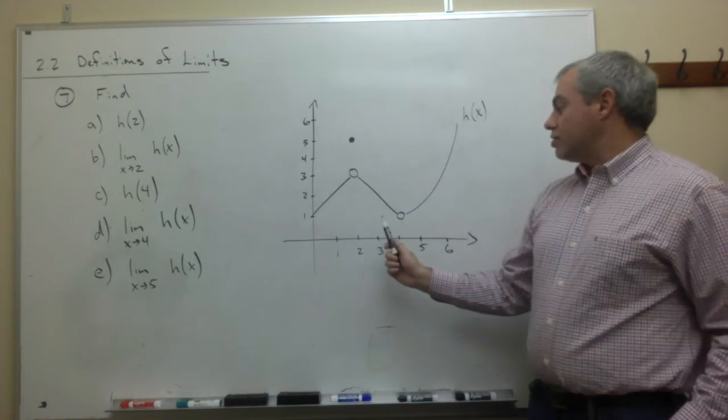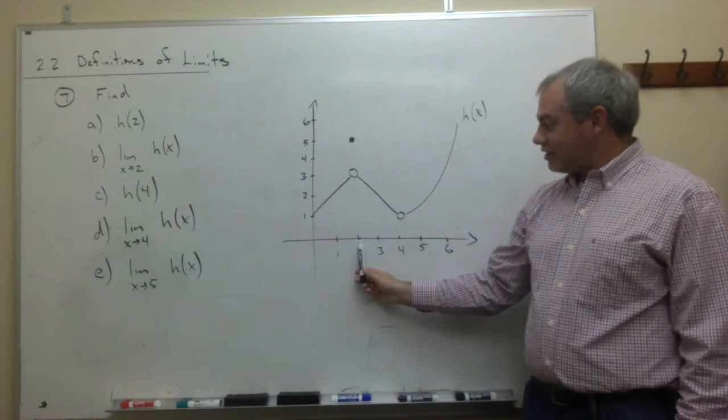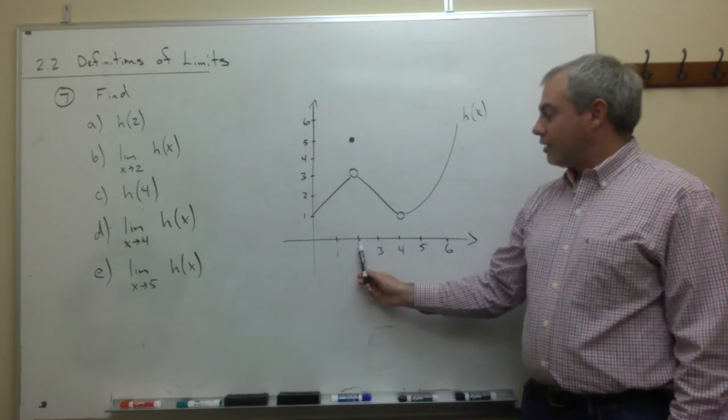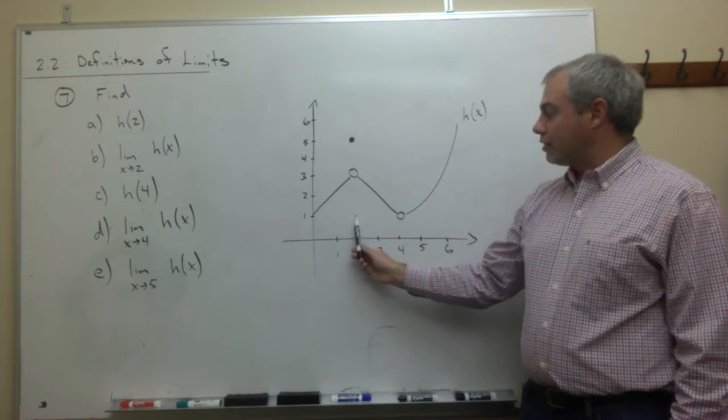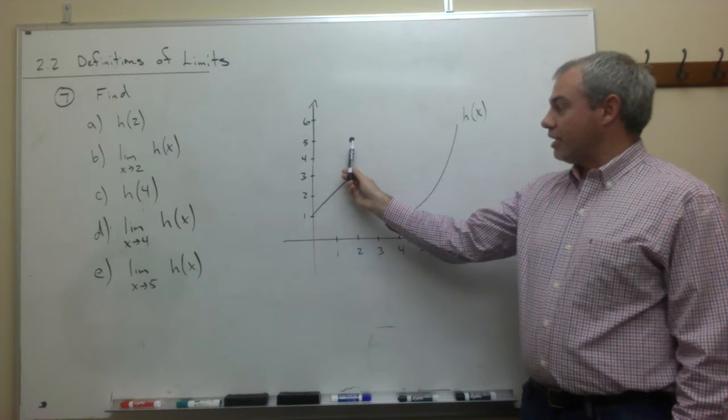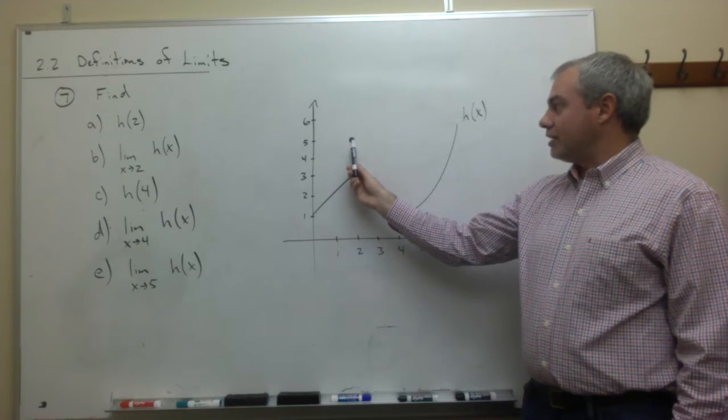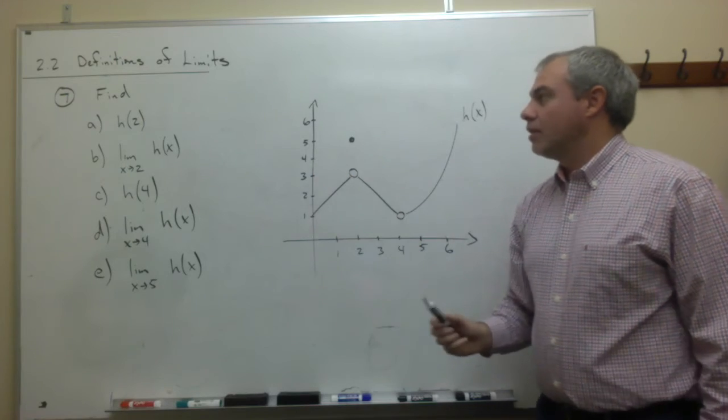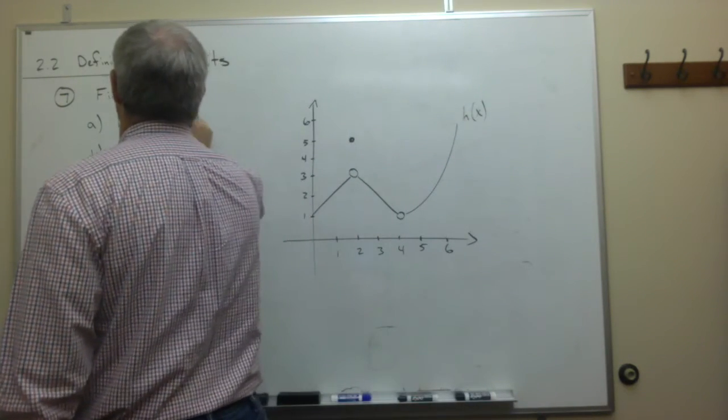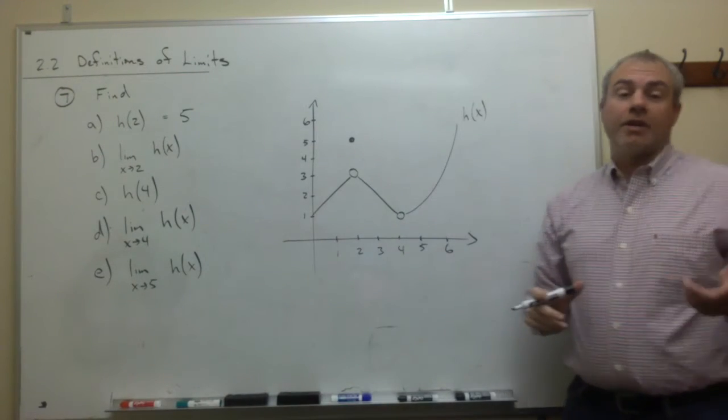So what we're looking at is what is h of 2. In other words, right at 2, is there a point over 2? And we look on this graph, is there a point over 2? I go up, there's not a point here, but there is a point here. So there is a point over 2, and that point is 5. So we'd say that h of 2 is 5. And it's really important that we remember that's not to be confused with the limit as x goes to 2 of h of x.